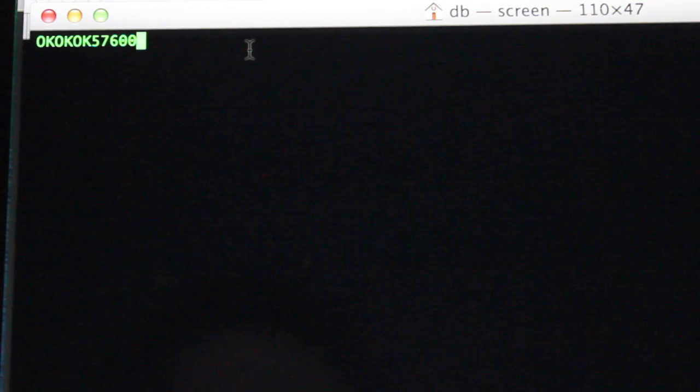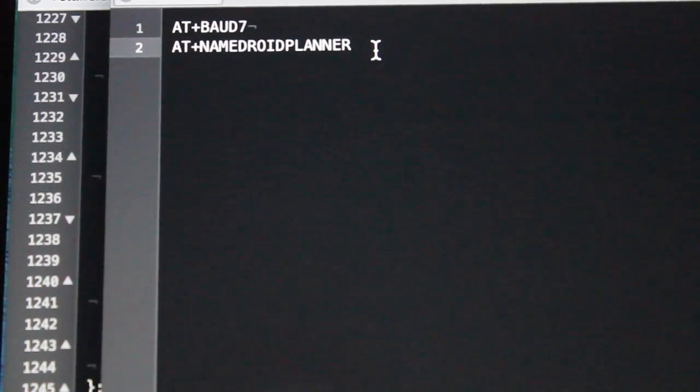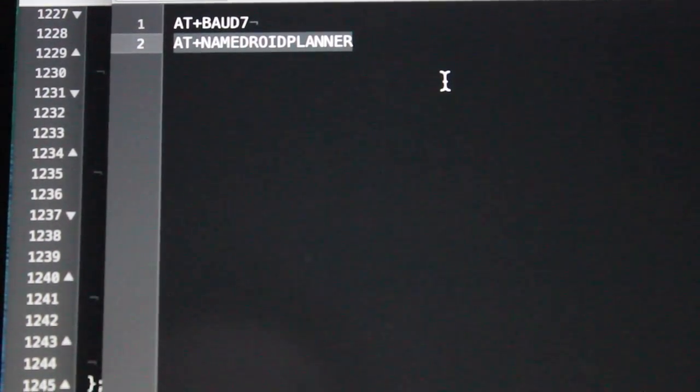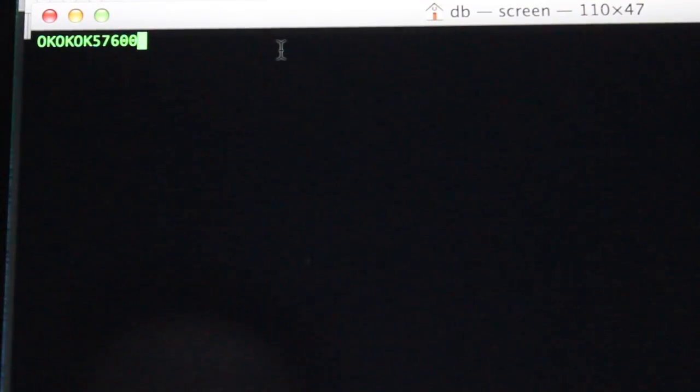Now we can do 115,200, but I'm going to start with 57,600 just to see how that works. And another command that we can use is we can change the name of the module that shows up in our Bluetooth list. So I'm going to change it to Droid Planner. So I have AT plus name with no space and then Droid Planner. So I'm going to paste that in there.